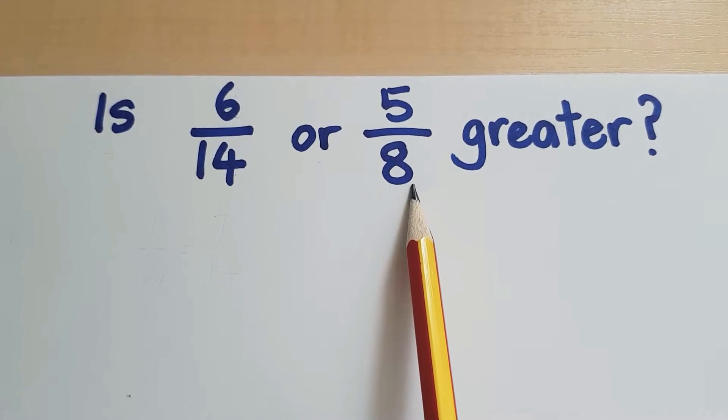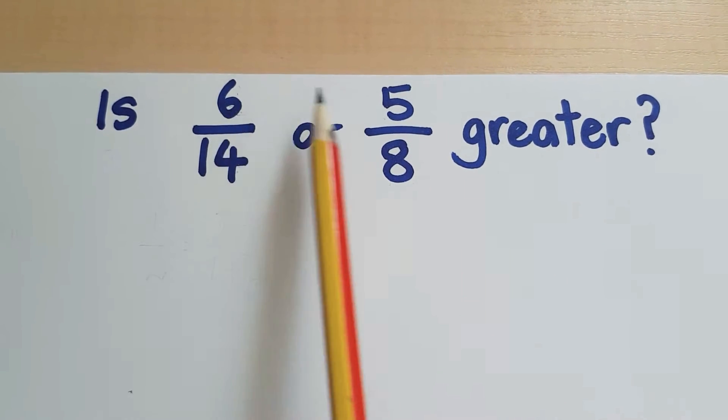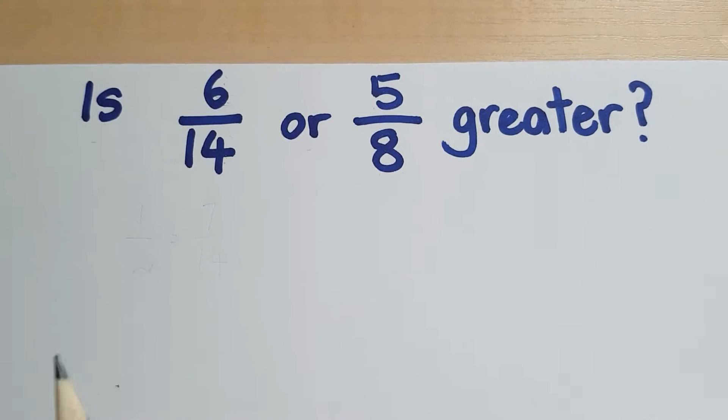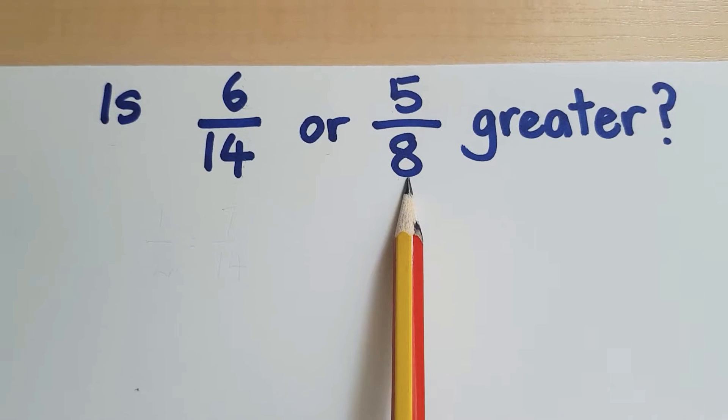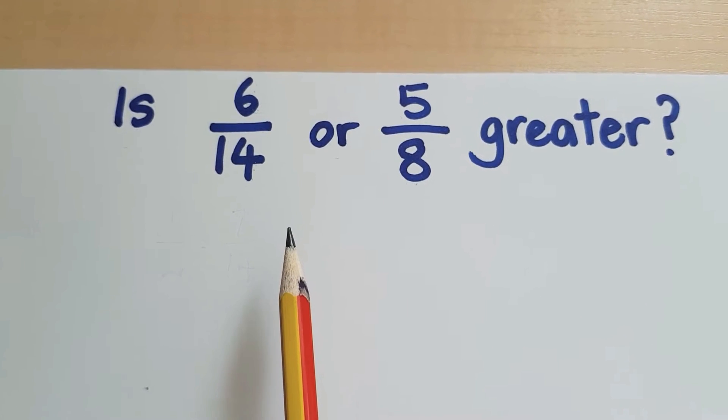The two fractions we have here today are 6/14 and 5/8. The first thing I'm going to check is if they have the same numerator, 6 and 5. No, they do not. Next, I'm going to check if they have the same denominator and they do not. So I'm going to compare to half.